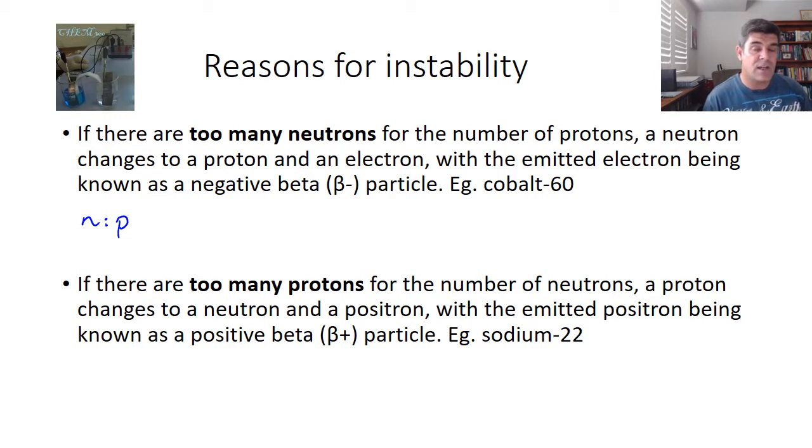We looked at in the previous video that the easiest way to have a balance, or at least to try and restore a balance when there are too many neutrons, is for a neutron to be converted into a proton and an electron.